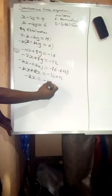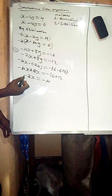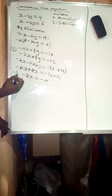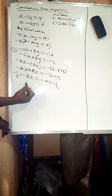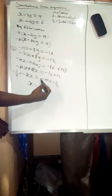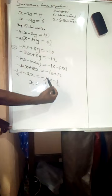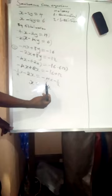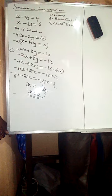To get the value of x, we eliminate the negative 2 by using its multiplicative inverse, which is negative one-half. Multiply both sides by negative one-half: negative one-half times negative 2 gives positive 1, so we have x. On the right side, negative 4 times negative one-half gives positive 4 over 2, which equals 2. Therefore x equals 2.